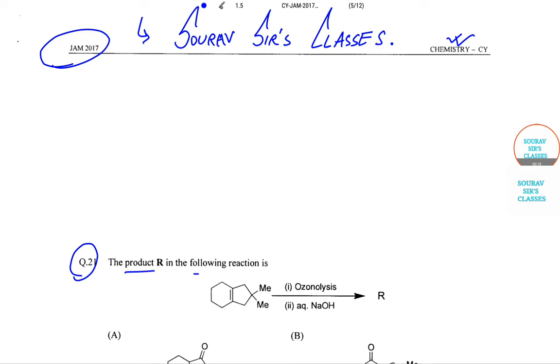product R in the following reaction is given: ozonolysis and aqueous NaOH, and we have four options. So let's do it. Now, ozonolysis of alkene forms